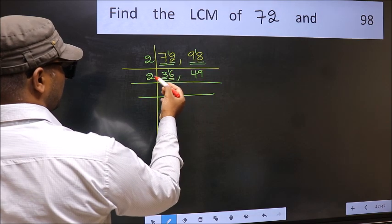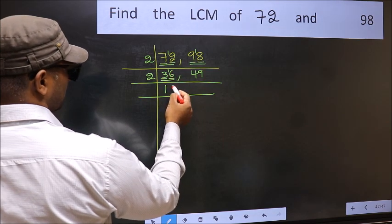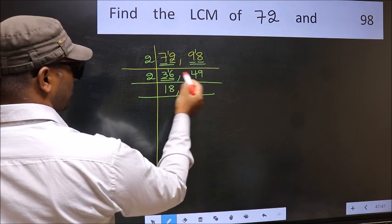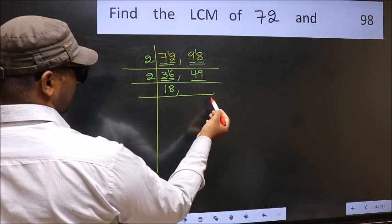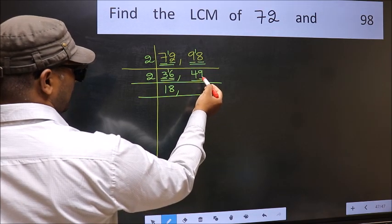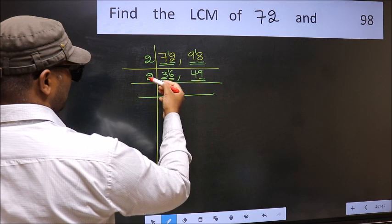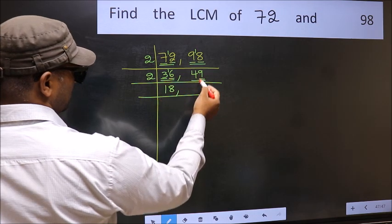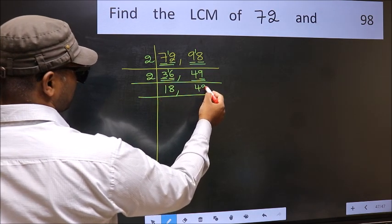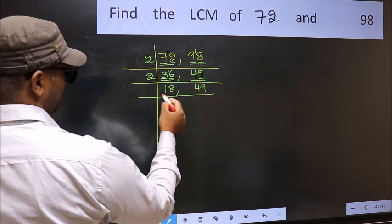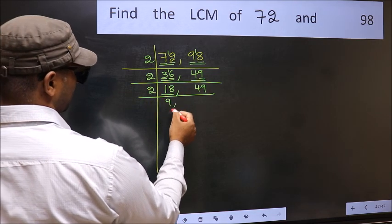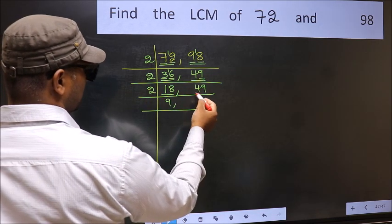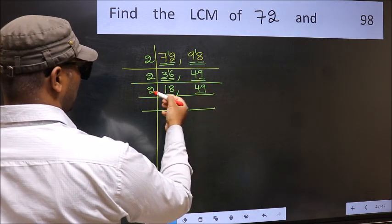We get 16 — in the 2 times table, 2 × 8 = 16. The other number, 49: the last digit is 9, which is not even, so 49 is not divisible by 2. Write it down as it is. Now 18 is 2 × 9 = 18; the other number 49 is not divisible by 2, so write it down as it is.